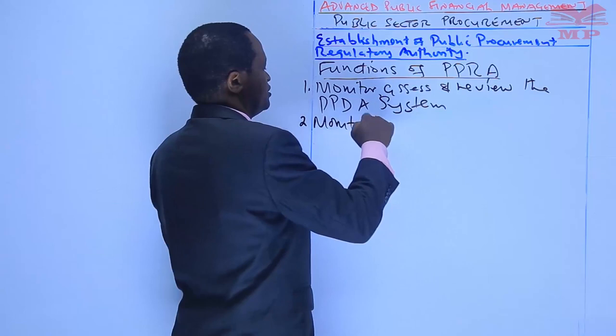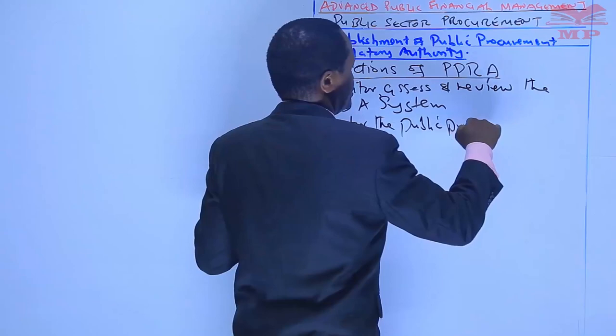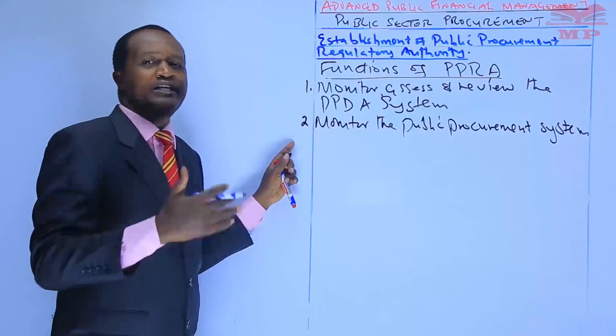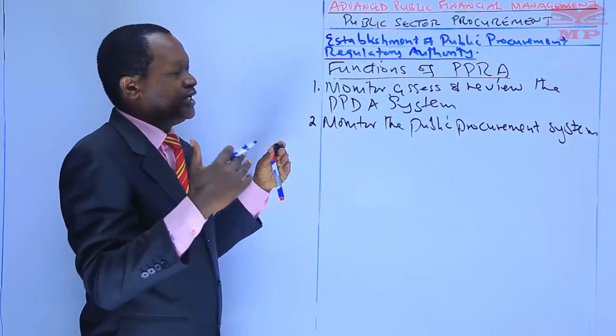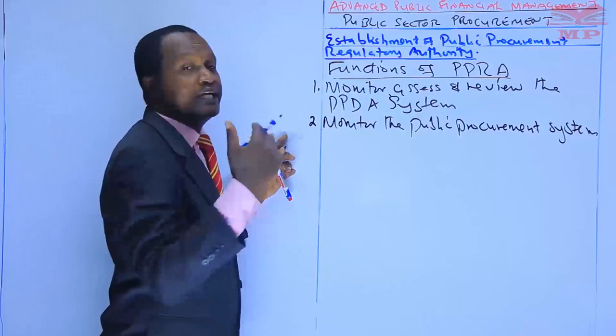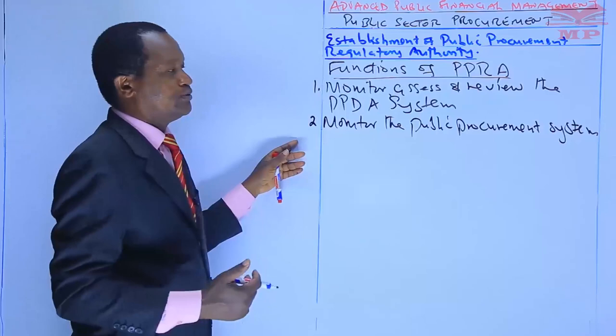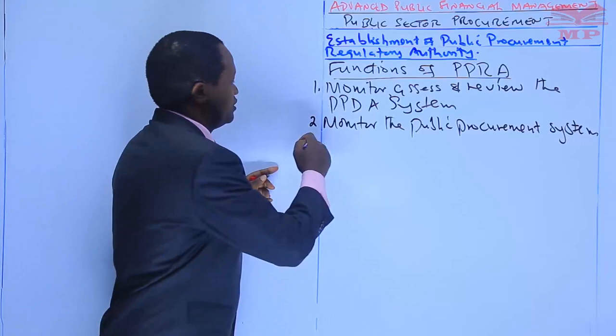The second function of PPRA is to monitor the public procurement system and report on the overall performance of each state to the Cabinet Secretary and the county executive member of finance in each county, with reports and recommendations for improvement — covering both the national government and county level.